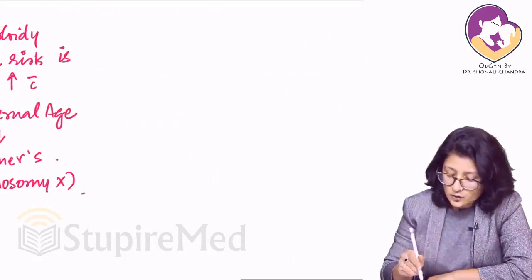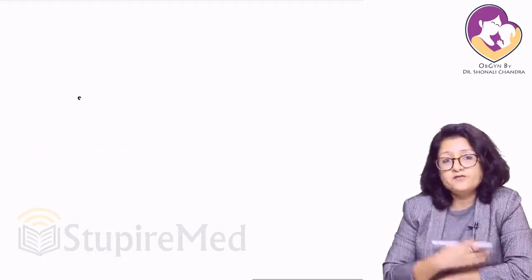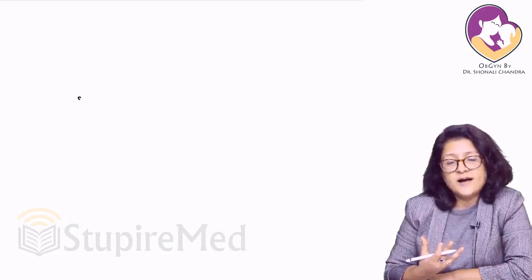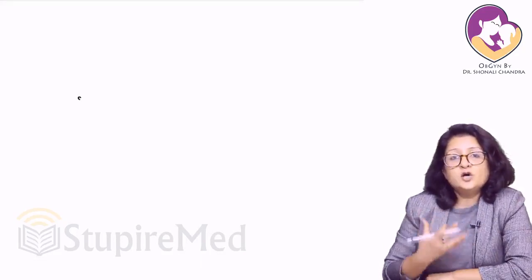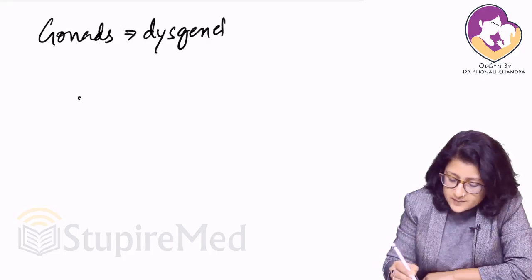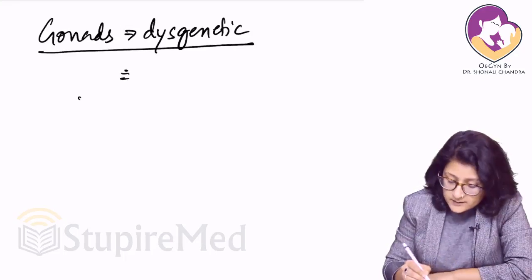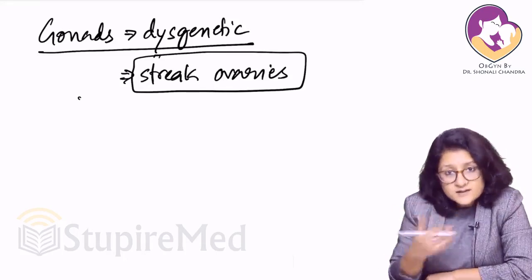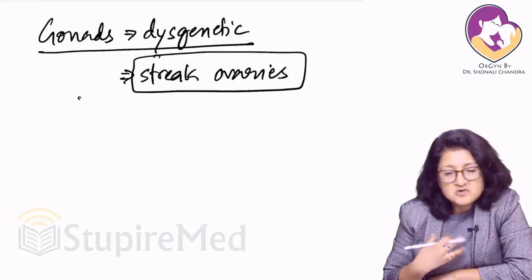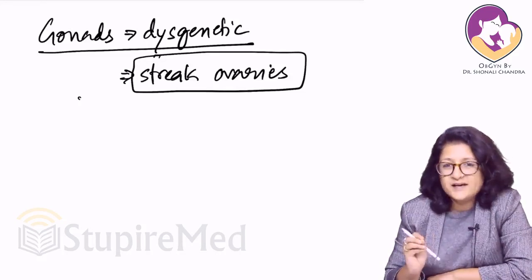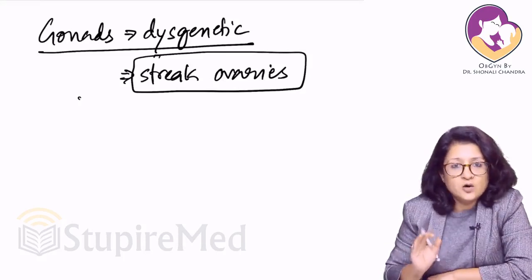What happens with Turner syndrome is that for the development of ovaries, both X chromosomes are supposed to be present normally. In these cases, ovarian development does not proceed normally because of the absence of one X chromosome. The gonads become dysgenetic — they are called streak ovaries. They do start developing some oocytes and follicles, but almost all undergo atresia, and at the end of intrauterine life the ovaries are nothing but a streak of tissue containing almost no follicles.